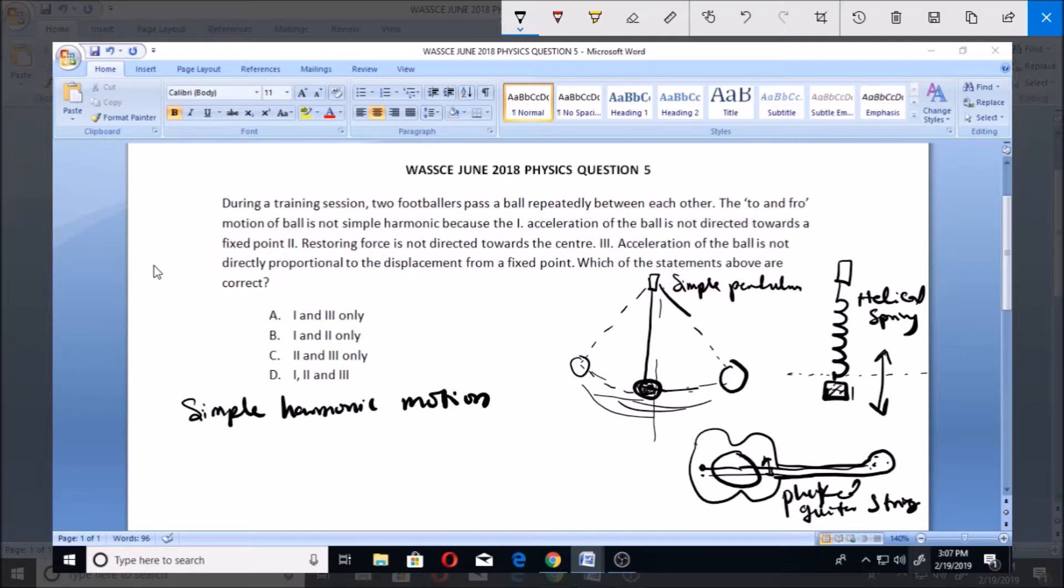Now one very important attribute of a simple harmonic motion: First one is that the acceleration of the load or the string is directed towards a fixed point. Very, very important.